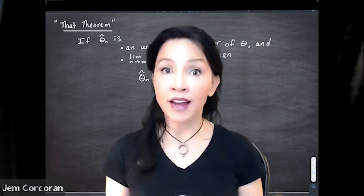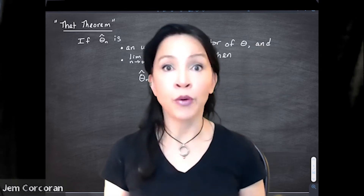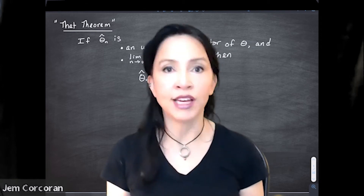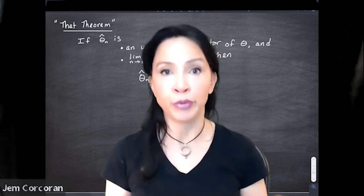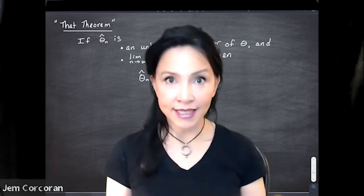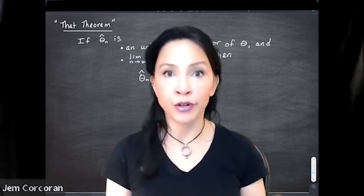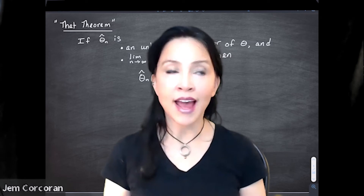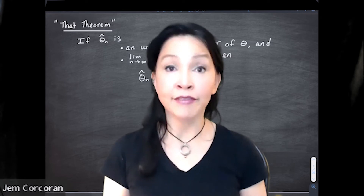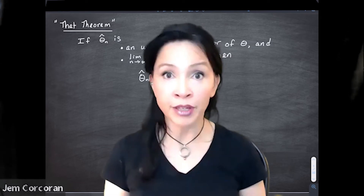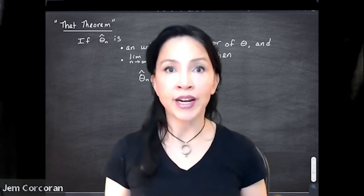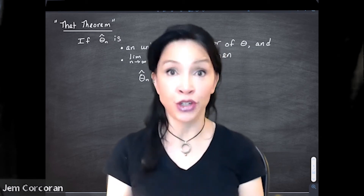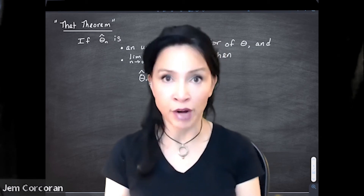We define a few senses about what it means for an estimator, a random variable, to get closer to a parameter theta. In this lesson, we're talking about convergence in probability. We have an epsilon definition of convergence in probability, but you're not going to want to use that very often. We have easier ways to show convergence in probability.